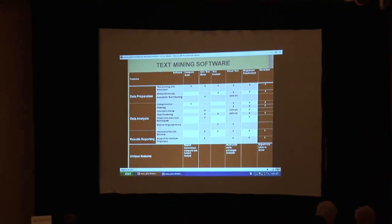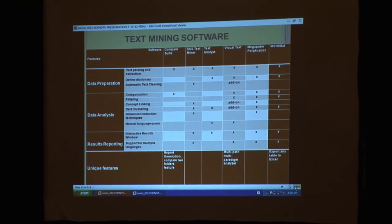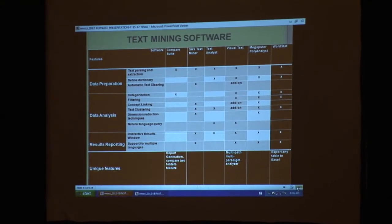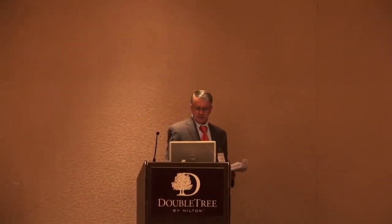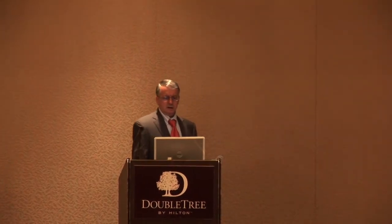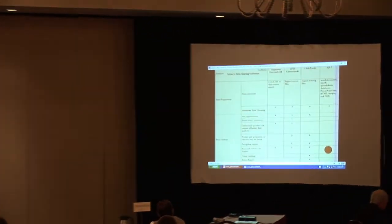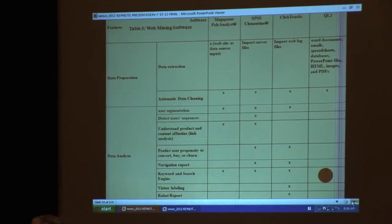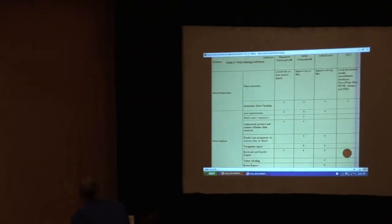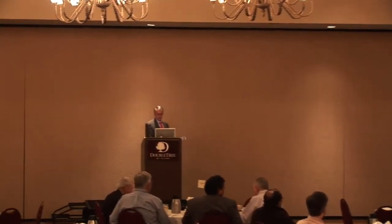Here we have some text mining software we looked at: Compare Suite, SAS Text Miner, Text Analyst, Visual Text, Megaputer Polyanalyst, and Wordstat. We evaluated them across data preparation, data analysis, and resulting reports. Compare Suite only had two categories. SAS Text Miner and Visual Text were most comprehensive, and Megaputer Polyanalyst also had most features. We also looked at SPSS Clementine, ClickTracks, and QL2 for web mining software. ClickTracks and Clementine had most of the features; QL2 had the least, and Megaputer Polyanalyst came in second.